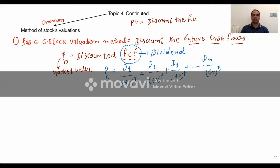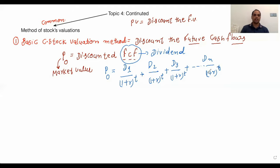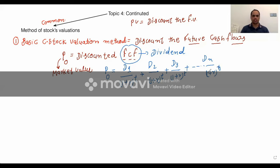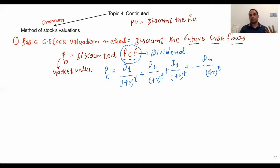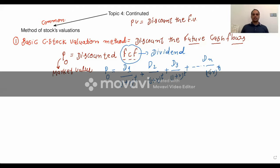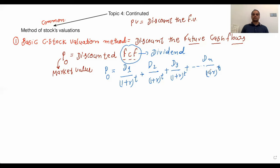We're going to discount all future dividend values to get the market price of the stocks. We will not go into calculations for this topic because we already covered this in a previous lecture — I'm just making connections between this stock valuation method and the time value of money from topic three. That's the first method.